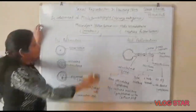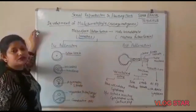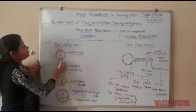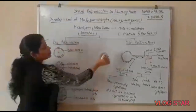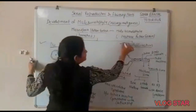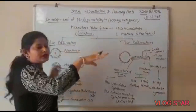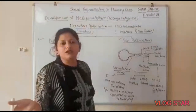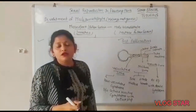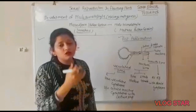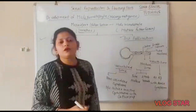The development of the male gametophyte is divided into two steps. One is called pre-pollination development and the second is called post-pollination development. Pollination is the transfer of pollen grain from anther to stigma. The process of pollination helps in the transfer of pollen grain.